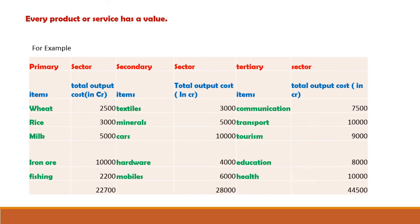For the tertiary sector, communication services generate 7500 crores of rupees, transportation services generate 10,000 crores, tourism 9000 crores, education 8000 crores, and health 10,000 crores of rupees. So the tertiary sector generates 44,500 crores of rupees in a year. Looking at these three sectors, the income of the tertiary sector is maximum while the primary sector is minimum in terms of final output.